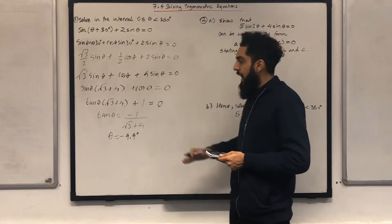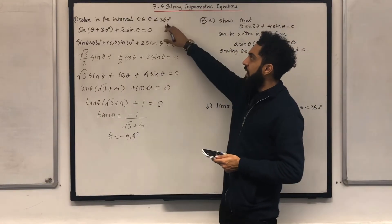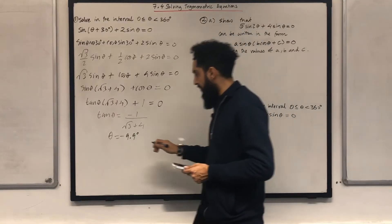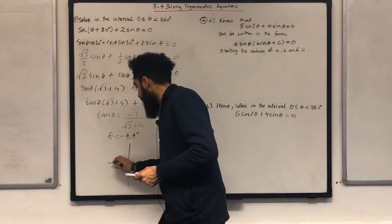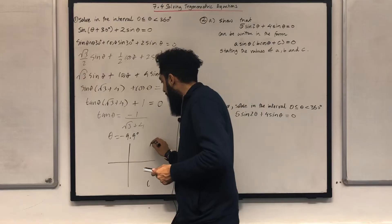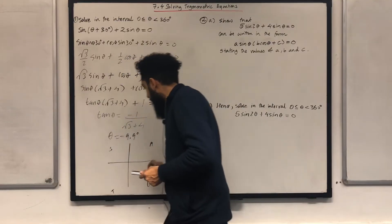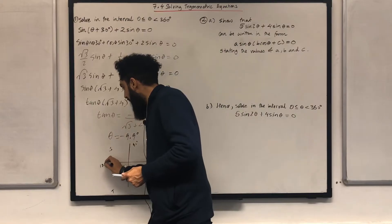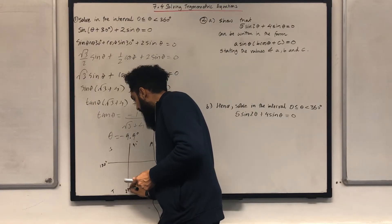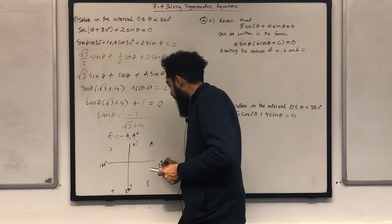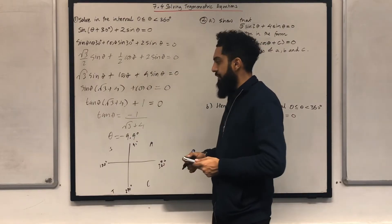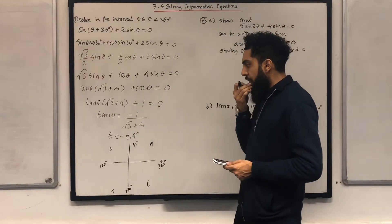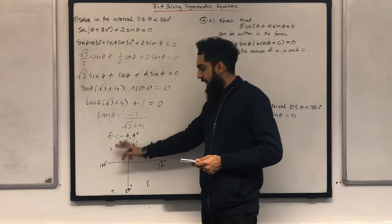To obtain all the other solutions in this particular interval, what I need to do is draw a CAST diagram. Here's my CAST diagram: C, A, S, T — with 0, 90 degrees, 180 degrees, 270 degrees, 360 degrees. I need to draw two lines in this particular CAST diagram.